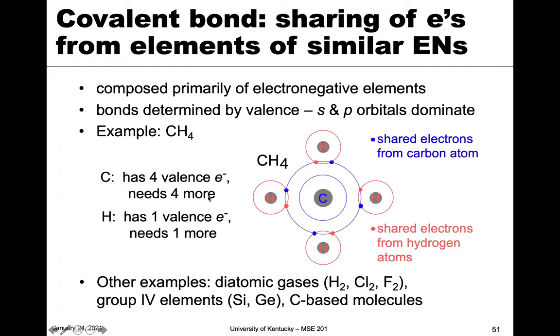So carbon has four valence electrons. It needs four more, or needs to get rid of four. And hydrogen has one, so it needs one more to create a stable shell. And so here's a schematic of how it can do that. If we look at carbon, it's got four, the blue electrons. Hydrogen has one.